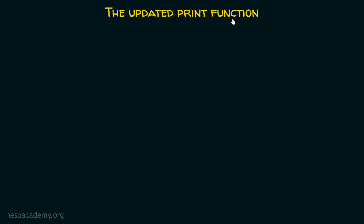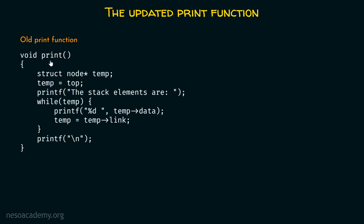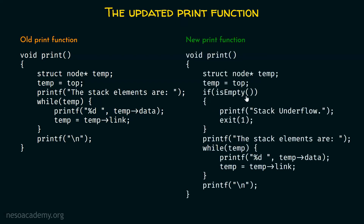Now let's write the updated print function. Here, first we have to declare a temporary pointer which must point to the first node of the list. Then we need this while loop for traversal to obtain all the elements of the linked list. This is the old print function, and here we can add this piece of code: if stack is empty, then print stack underflow and exit with exit failure status. This new print function is better because we are also checking for the empty stack condition.